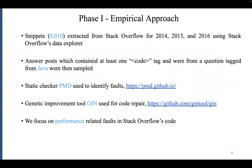Our approach was empirical and we started with approximately 8,000 Java code snippets that had been subjected to other research over the years. These snippets were taken from Stack Overflow, and in some pre-processing steps we tried to increase the chances of actually being able to compile them — for example, we would embed these code snippets in a class, import certain packages, and so on. Following this pre-processing, we used a very popular static checker called PMD to identify flaws. As our genetic improvement tool, we used GIN.